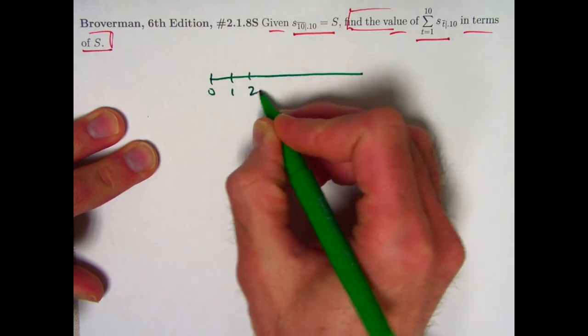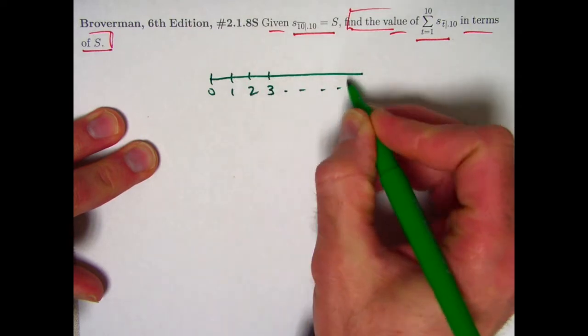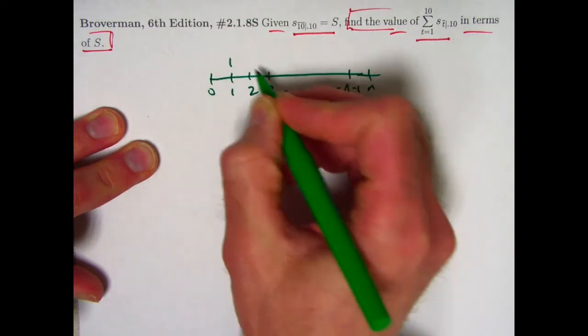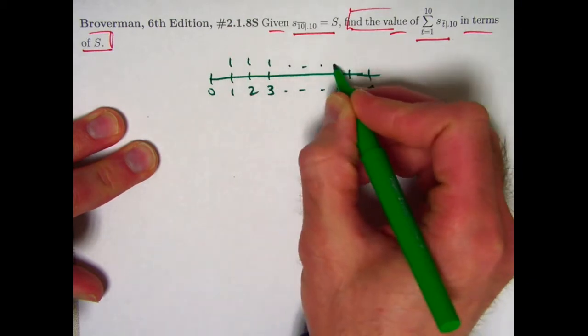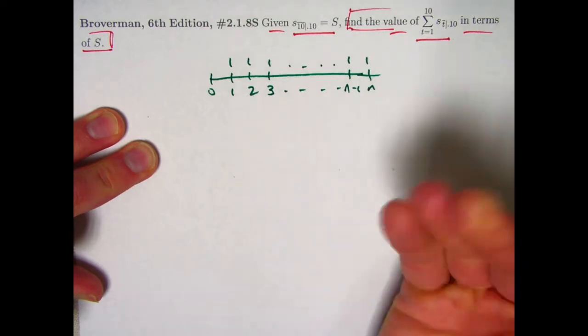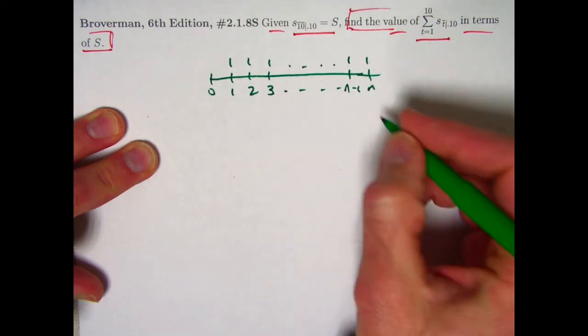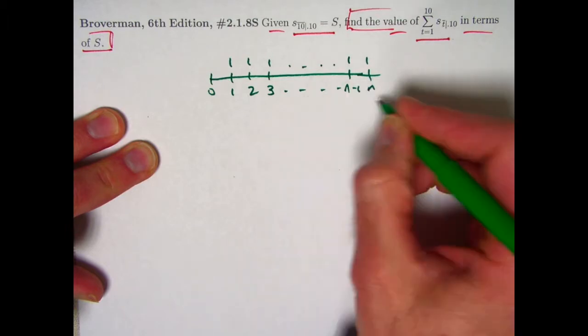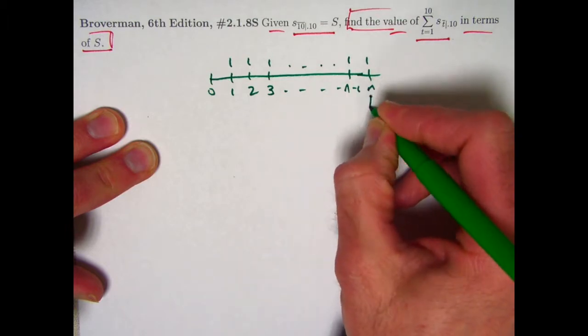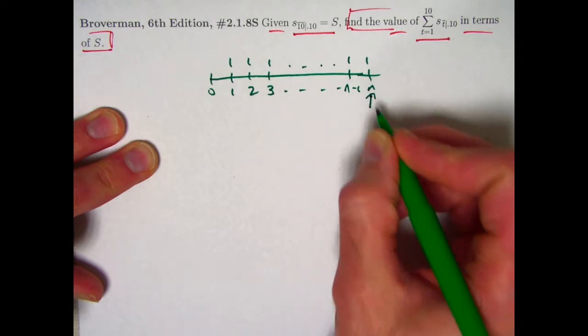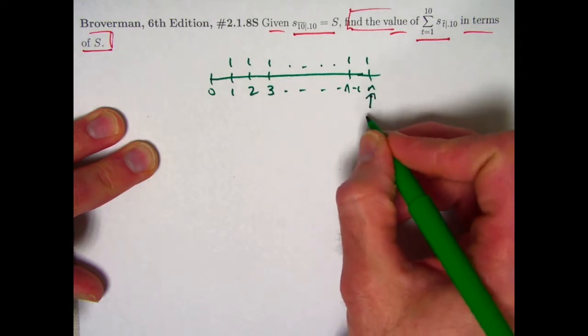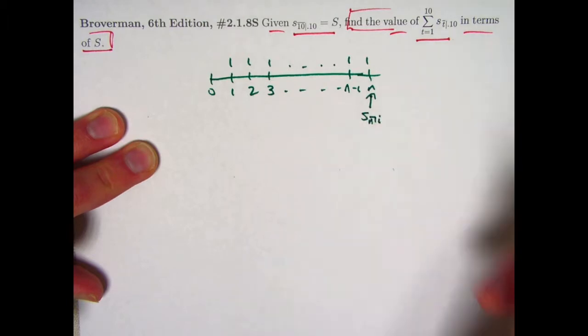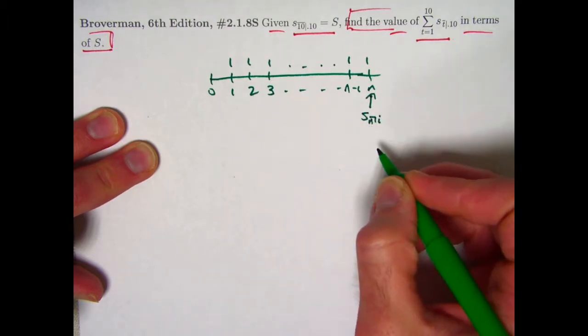In general, if you've got n payments of 1, say starting at time 1 and going to time n, if you find the future value of that annuity, that series of payments, all combined at time n, immediately after that last payment, that's given the symbol s sub n i. n is the number of payments, i is the interest rate.